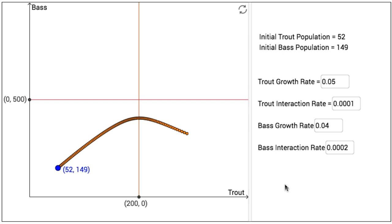In the interactive figure on the left hand side is a graph depicting the population of both the trout and the bass. Along the x-axis, we represent the population of trout, and along the y-axis we represent the population of bass.